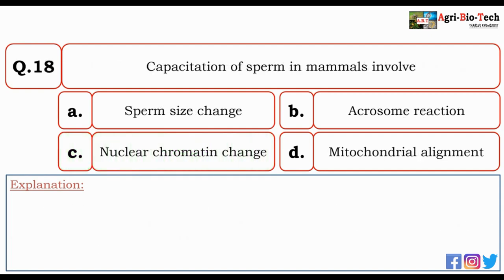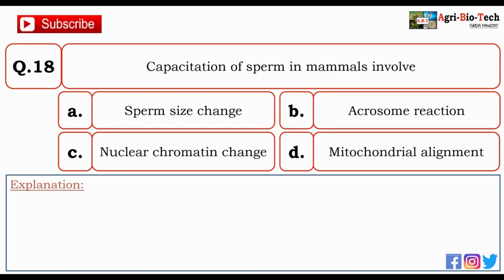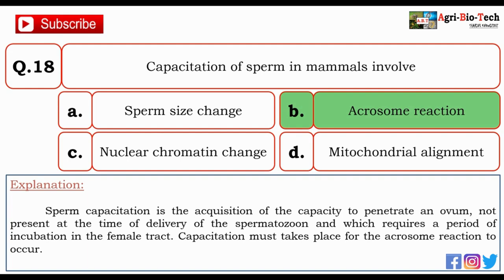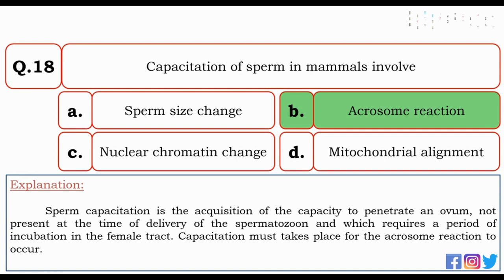Next question: capacitation of sperm in mammals involves — sperm size change, acrosome reaction, nuclear chromatin change, or mitochondrial alignment? The correct option is B — acrosome reaction. Sperm capacitation is the acquisition of capacity to penetrate an ovum, not present at the time of delivery of the spermatozoon, which requires a period of incubation in the female tract. Capacitation must take place for the acrosome reaction to occur.